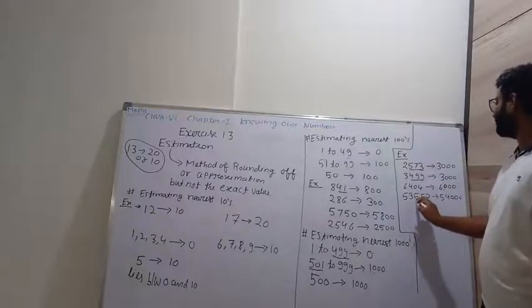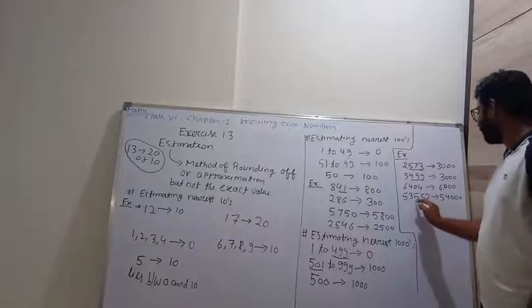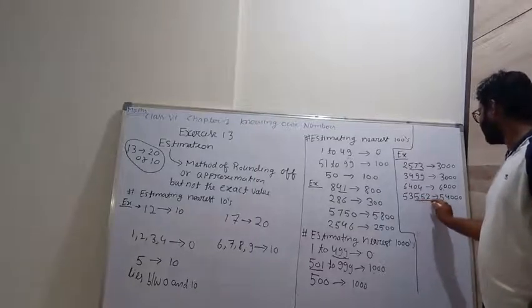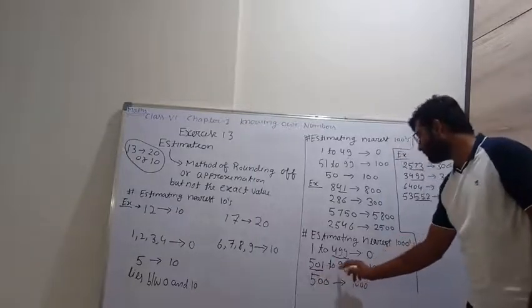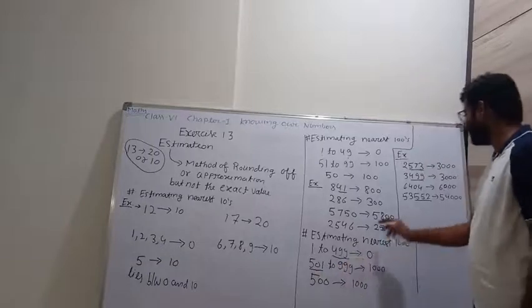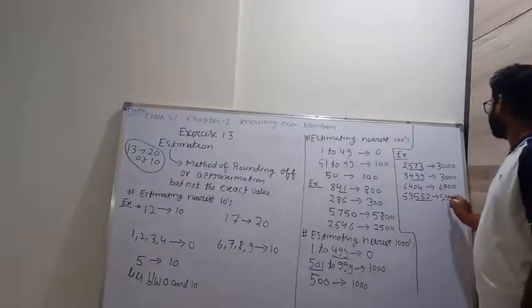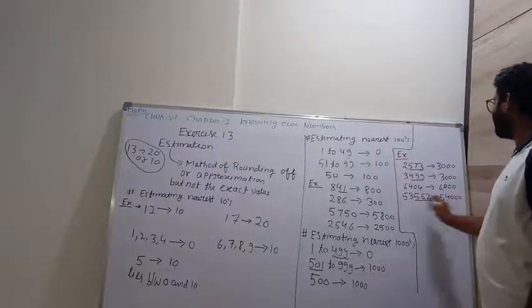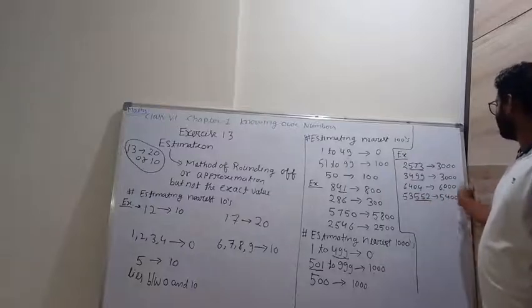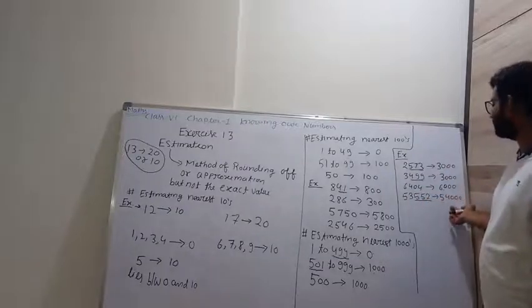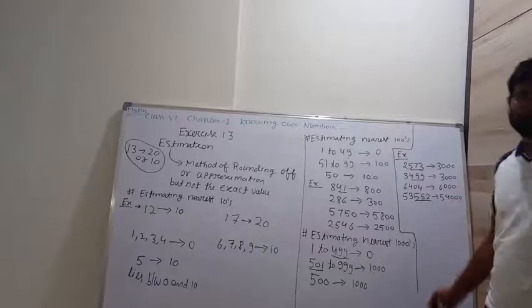Now, 53,552: here 552 lies between 501 to 999, so it is converted as 1000. Therefore 53,552 becomes 54,000.